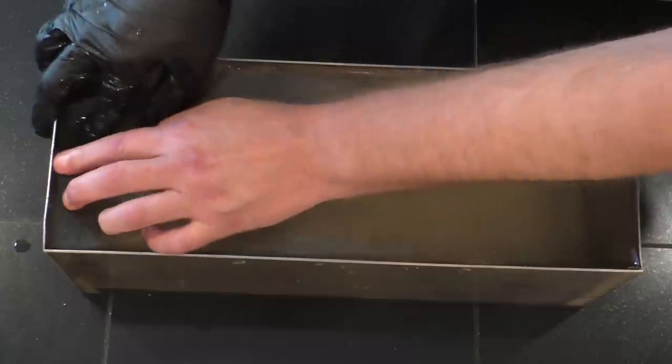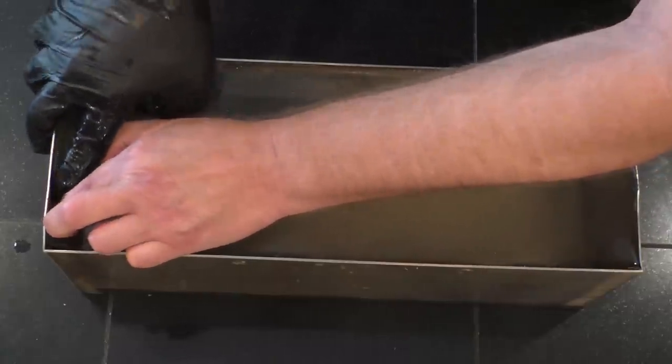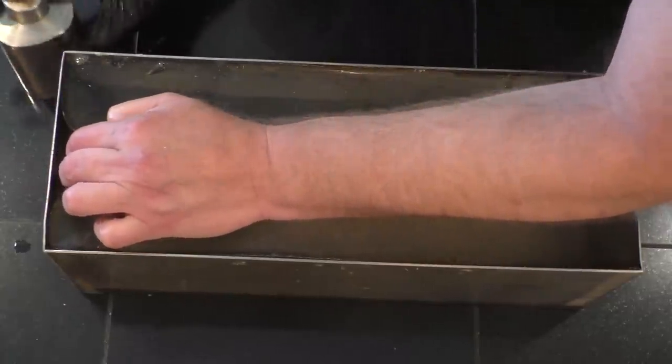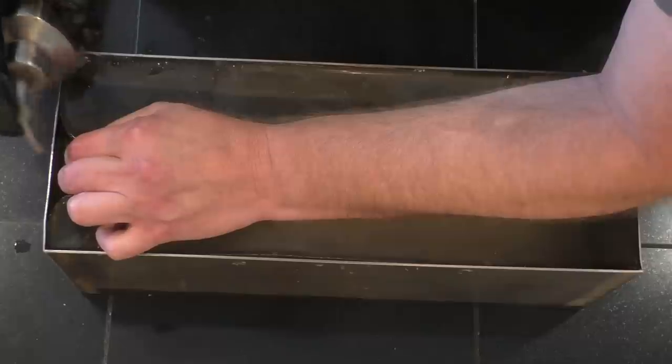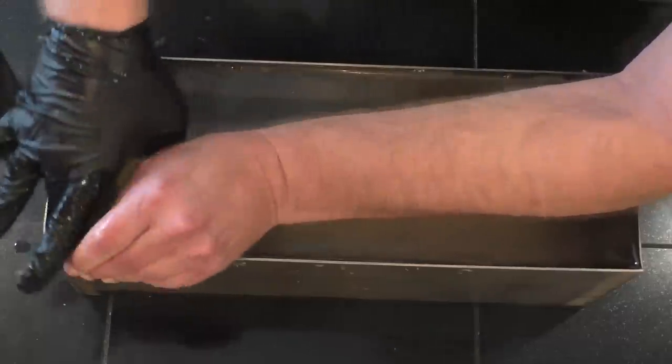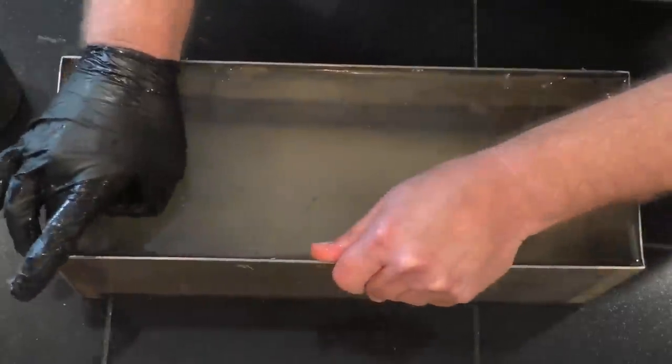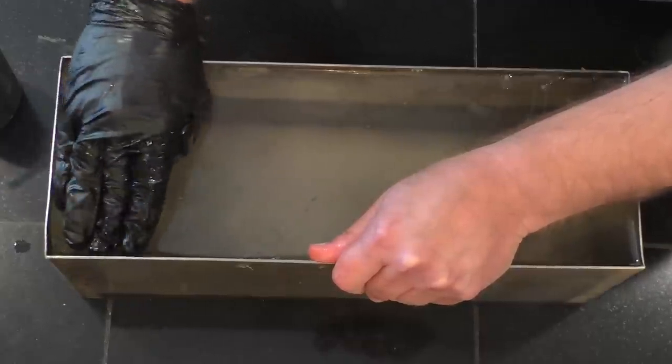The trick here is just to peel the gel away from the wall and squirt some liquid soap in there. The soap allows you to get your hand slid all the way to the bottom of the mold without damaging the gel itself. It can be a little bit fragile. You can damage it with your fingertips.